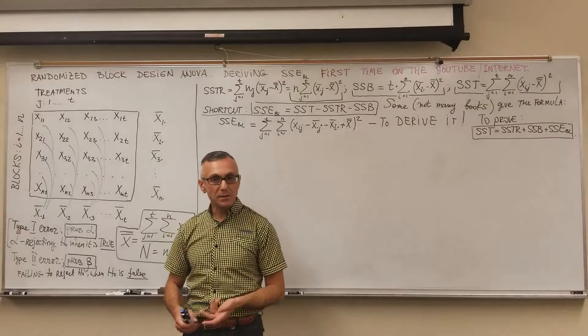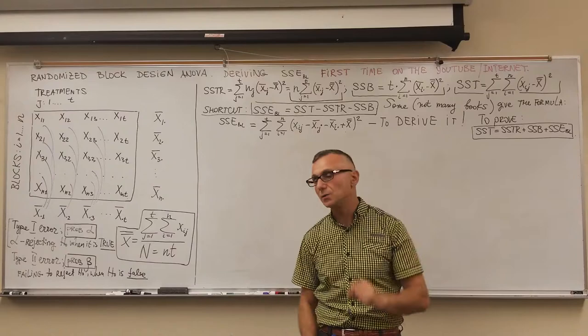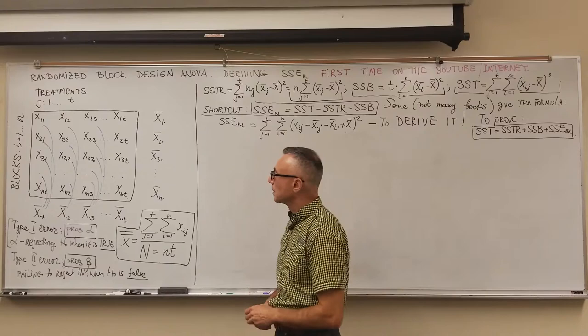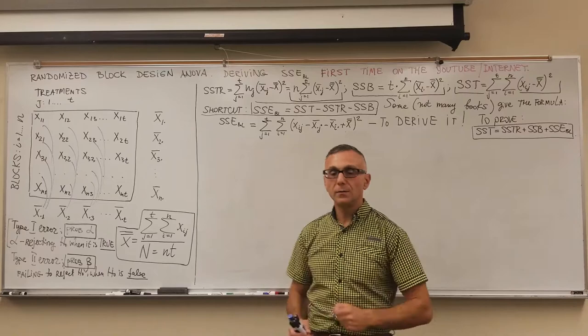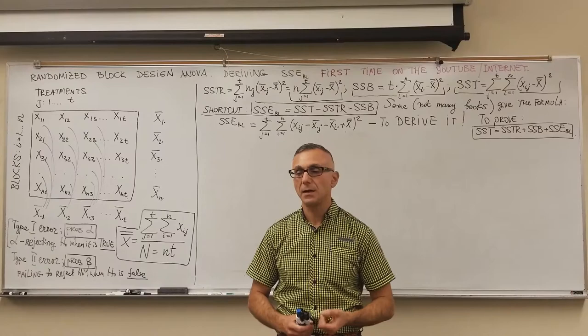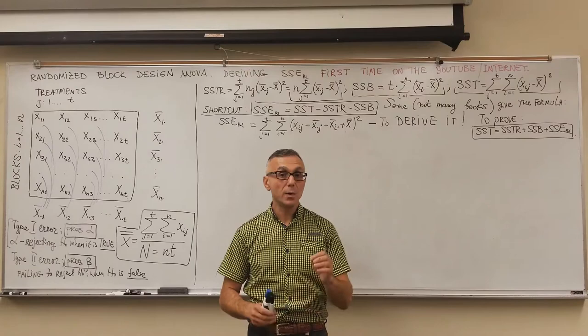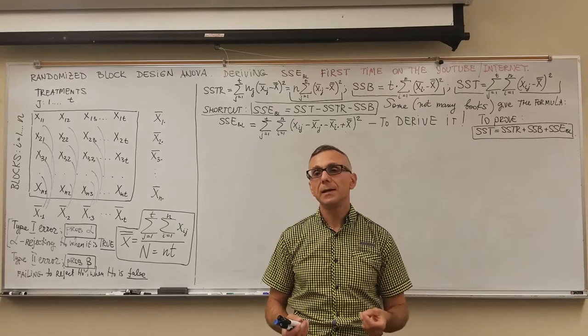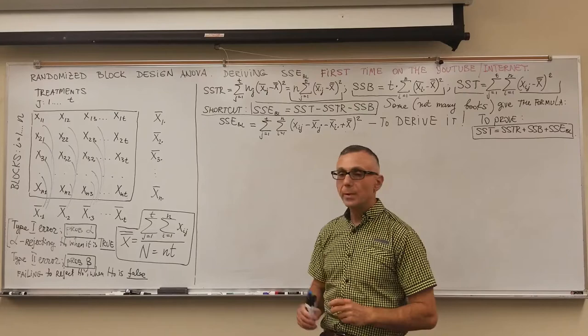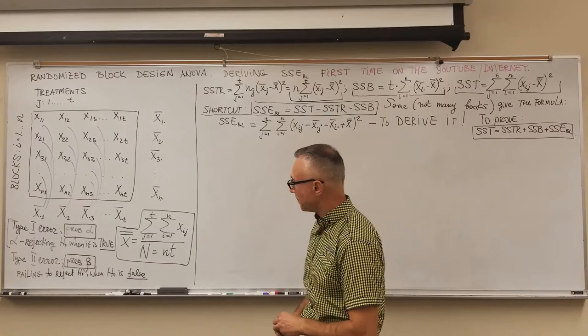I will also explain the improvement process of introducing blocks. As you remember, in the one-way analysis of variance our data was organized in a two-dimensional array — one driving factor, one attribute, one independent input variable called the treatment. In the randomized block design, Sir Fisher introduced blocks as a second attribute, kind of a second independent variable. It is sometimes called the two-way analysis of variance without interaction.